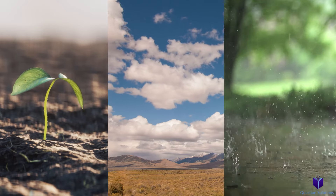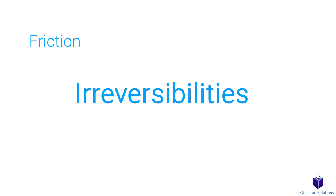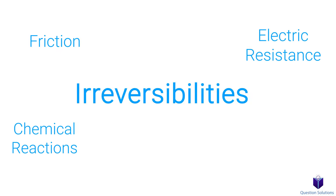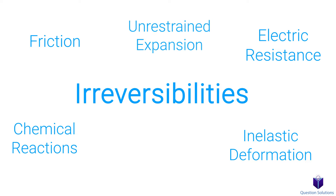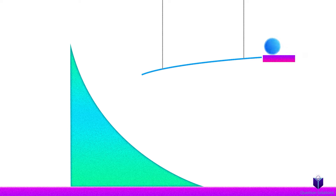This is due to factors called irreversibilities. A few of them include friction, electric resistance, chemical reactions, and elastic deformations, among others. Any single irreversibility factor will cause a process to be irreversible. Be careful not to misunderstand — a system can come back to its original state whether a process is irreversible or reversible. It's just that in irreversible processes, the surroundings will do some work on the system to bring it back to its original state.